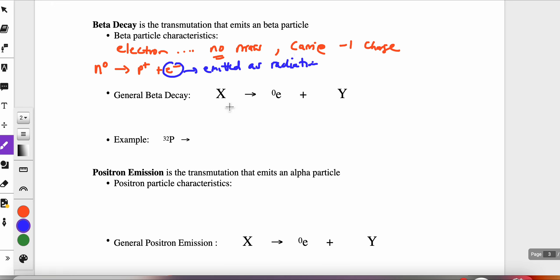General beta decay: we have our unstable starting atom with mass A and atomic number Z. It emits the beta particle, which takes no mass with it and carries that minus one charge. Here is our new structure which is more stable than what we started with. The mass doesn't change (A minus zero equals A), but the atomic number changes - Y's atomic number has to be Z plus one.